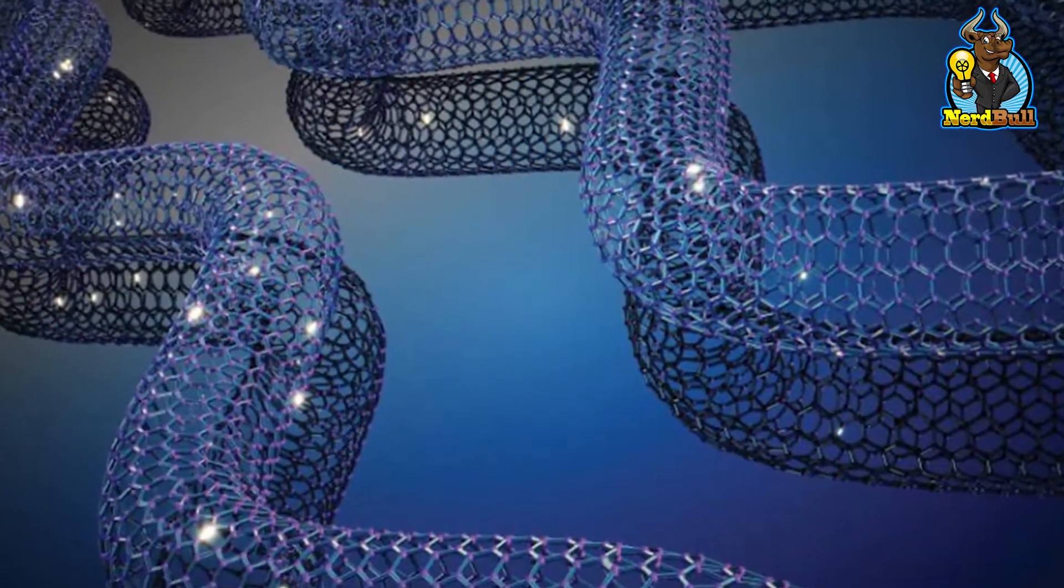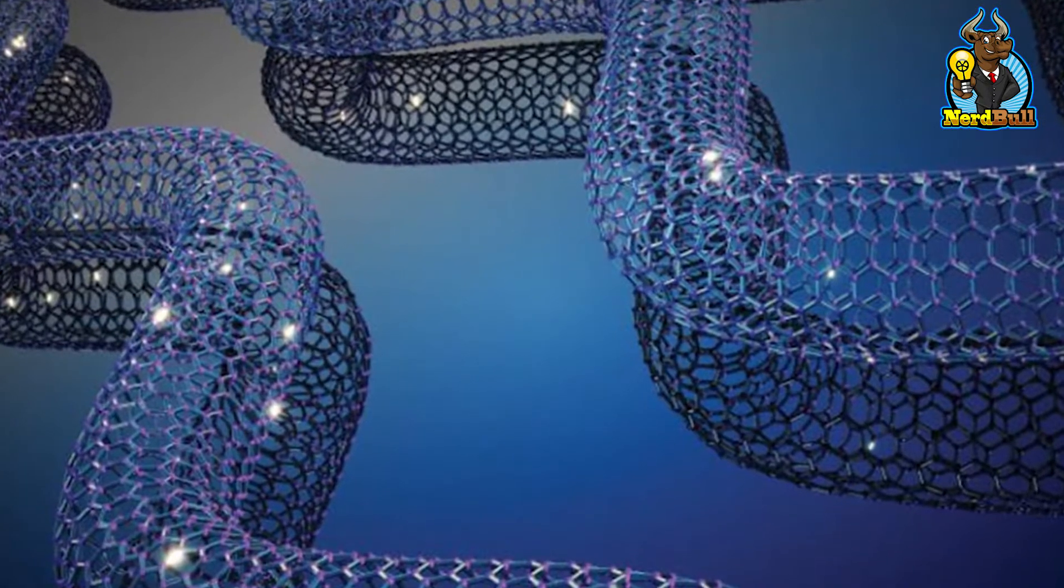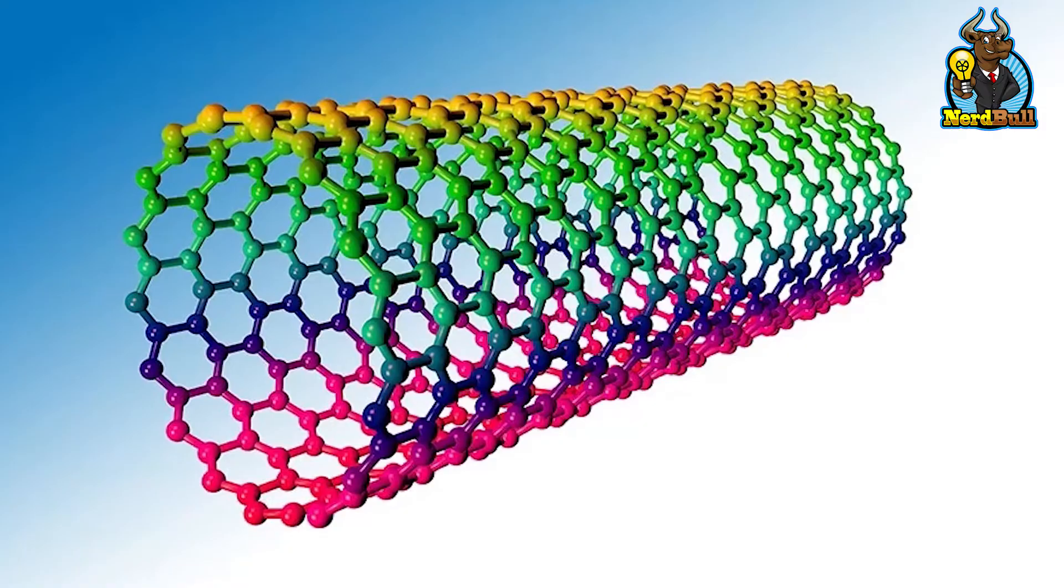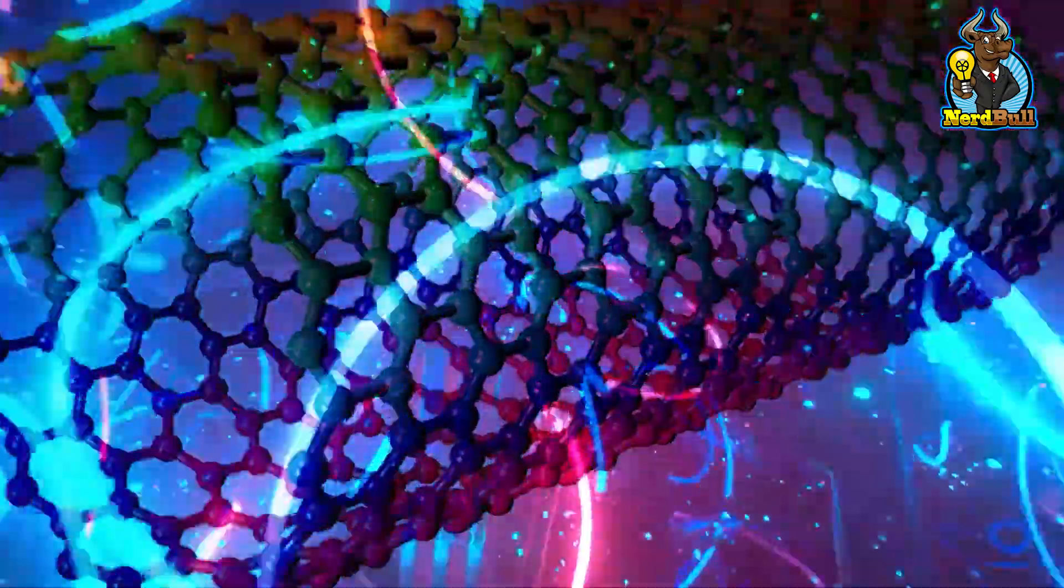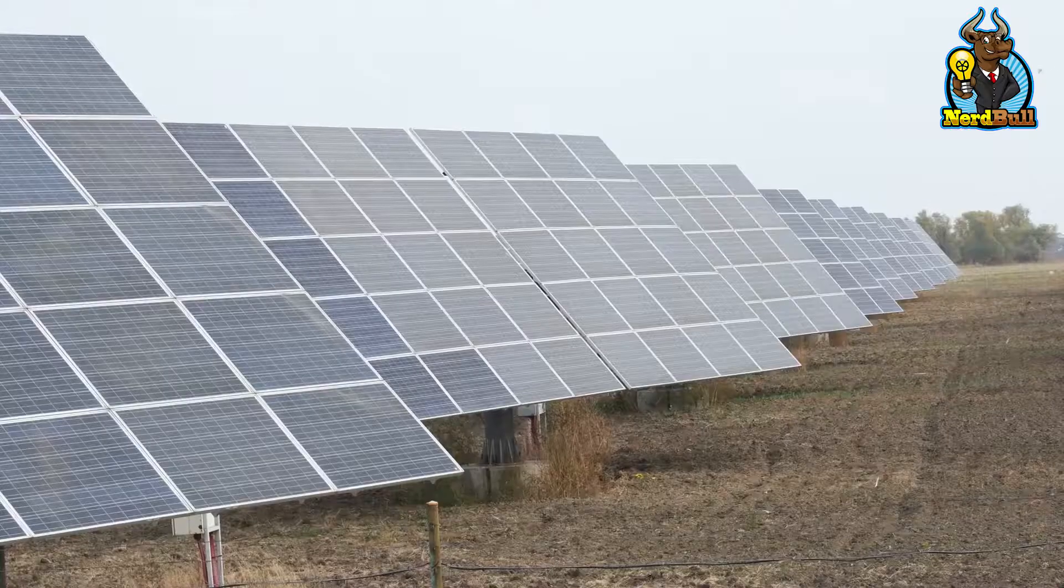The interesting fact here is a photoactive solar cell, composed entirely of carbon, has been built. This was possible because carbon nanotubes have exceptional electrical conductivity and light absorption properties, particularly in the near-infrared region.